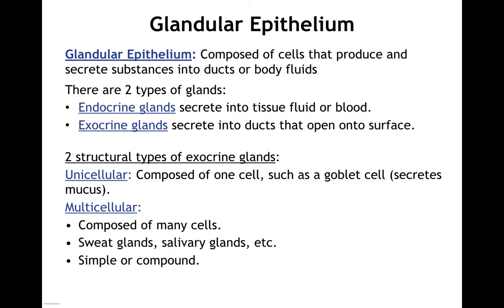Glands come from epithelial tissue. Glandular epithelium is composed of cells that produce and secrete substances into ducts or around their body fluids. There are two major types of glands: endocrine and exocrine. Endocrine glands secrete directly into fluids or blood, whereas exocrine glands have a duct that opens onto a surface somewhere. So exocrine glands have ducts; endocrine glands do not.